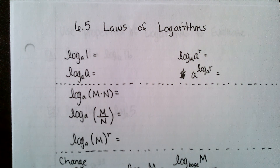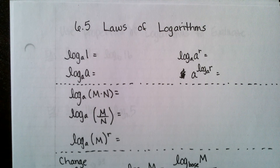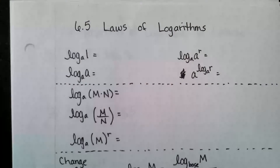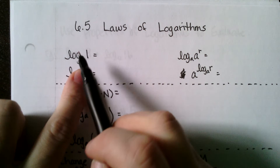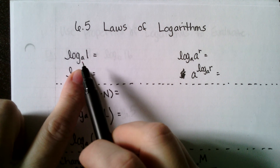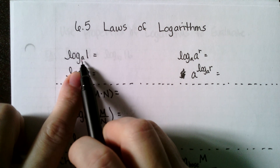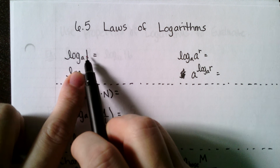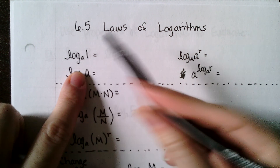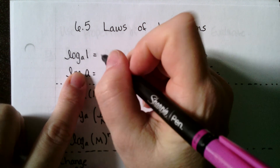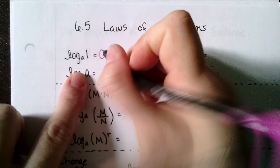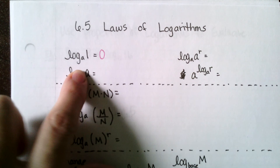Section 6.5 deals with some laws or properties of logarithms. A couple of these we've already seen in section 6.4. Because of the question that logs ask us, this log is asking: a raised to what power equals one? We saw in the last section that that property would always be equal to zero.